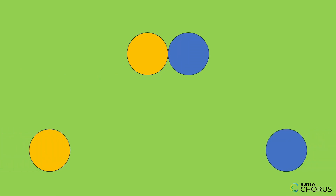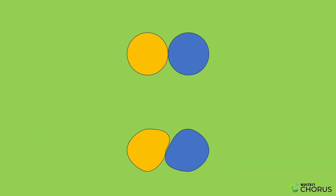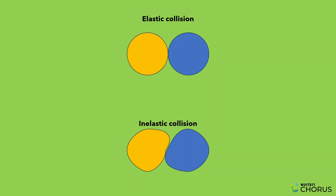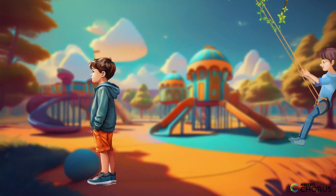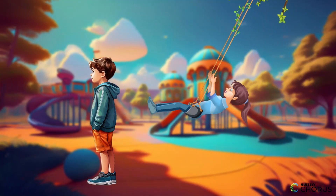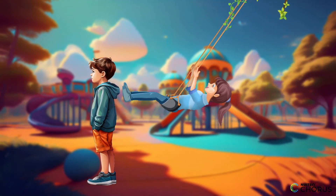When objects collide, they can either bounce off each other or stick together. If they bounce, it's called an elastic collision. If they stick, it's an inelastic collision. Let's look at some fun examples.